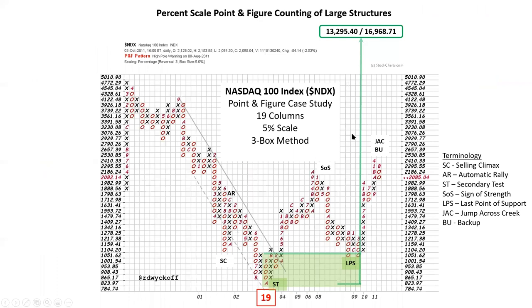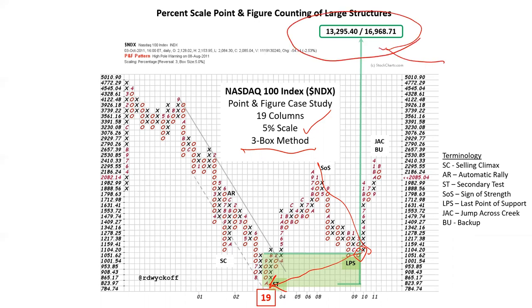I'll show you one more today and come back to this. This is percent scaling on the NASDAQ 100 — five percent scaling, three-box method. I count 19 columns from the last point of support to the low in 2002. The 2009 low shows a beautiful downtrending channel from the bear market back there. You can see this count and we're getting into the zone now of the count created off of that very important low. Thank you for being here and we'll see you next time.